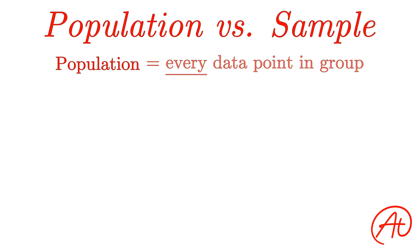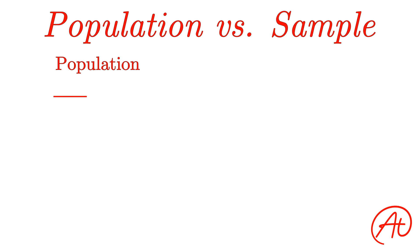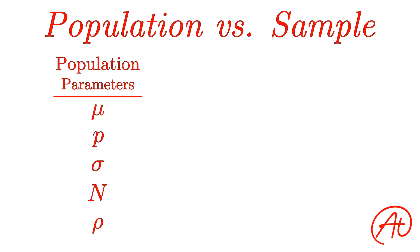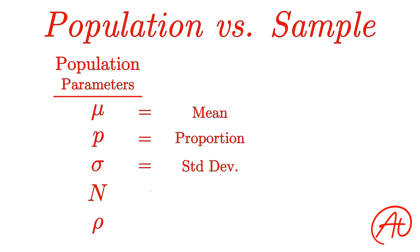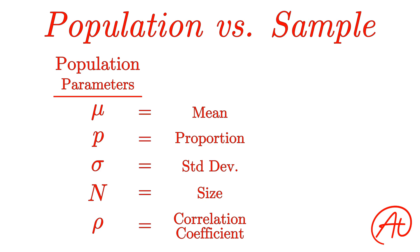Now let's quickly go over the various symbols and values that are used for a population. These are all called parameters, because they correspond to a population. First, we have the Greek letter mu, which is the symbol for population mean. Next, p is the symbol for population proportion. The Greek letter sigma is the population standard deviation. A capital N is the size of the population. And finally, the Greek letter rho is the population correlation coefficient. We'll be seeing a bunch more of these through future videos and examples.